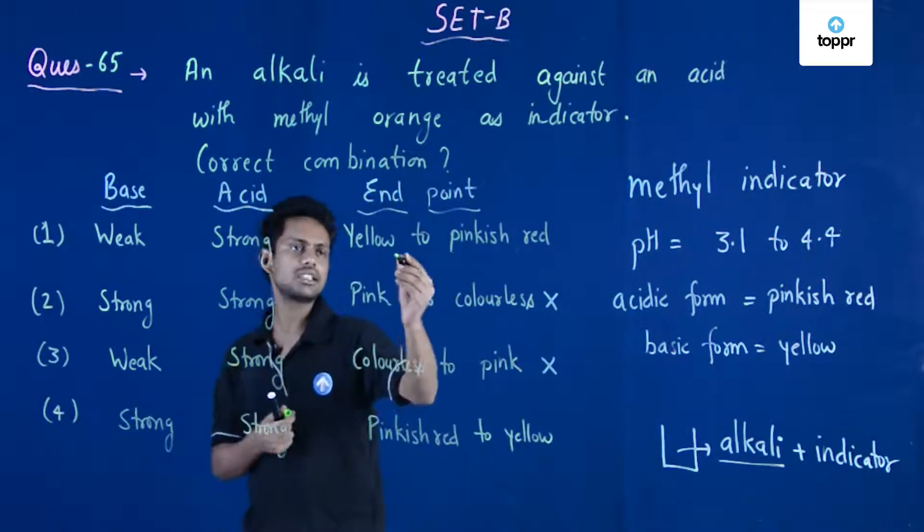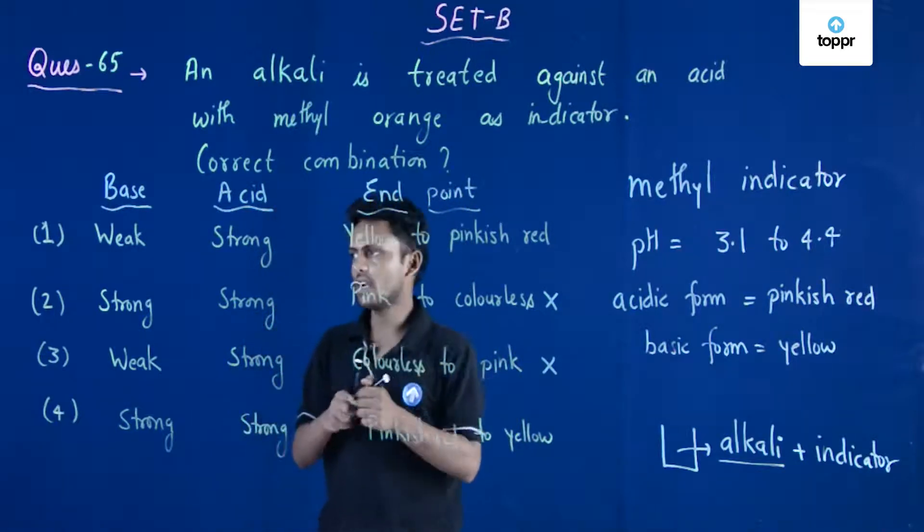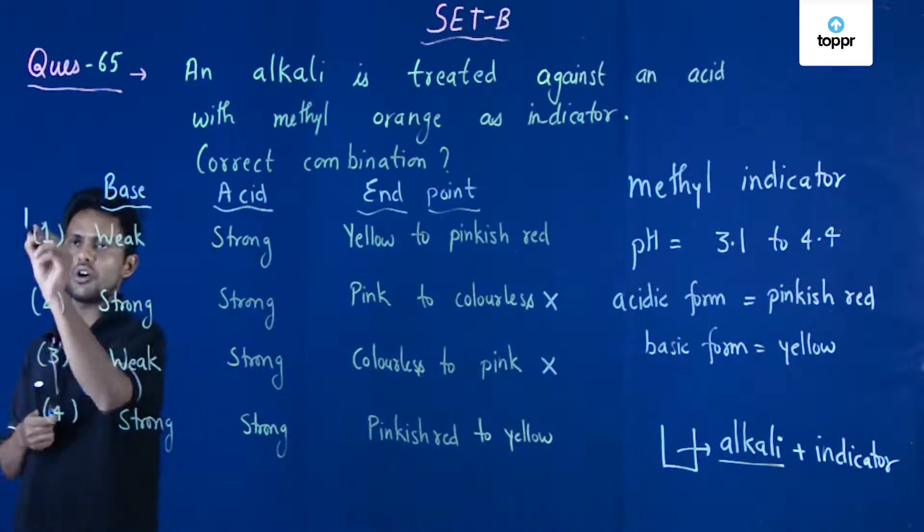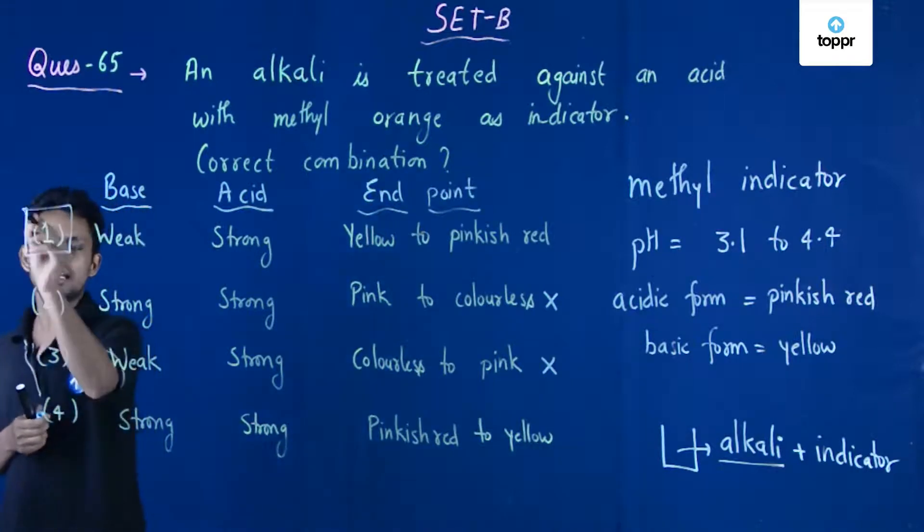When we add more and more acid to it, it will go towards pinkish red. So it starts from yellow and goes towards pinkish red, meaning option number one is correct.